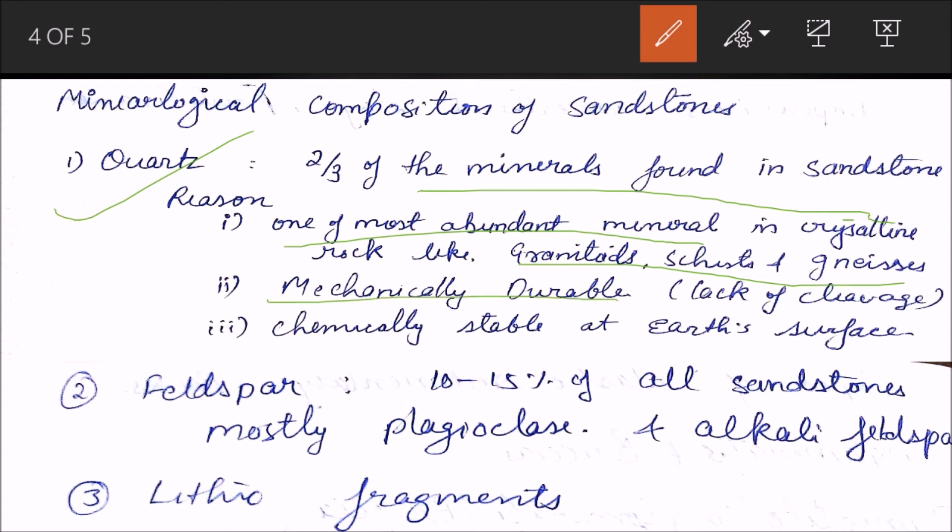It doesn't tend to break, it is mechanically durable. Thirdly it is chemically stable at earth's surface, unlike feldspar. Now feldspar contains about 10 to 15 percent of all sandstone, and mostly they are in plagioclase and alkali feldspar form.